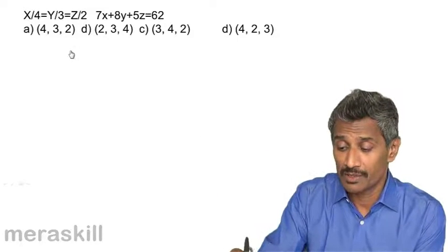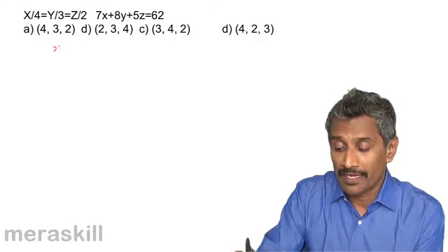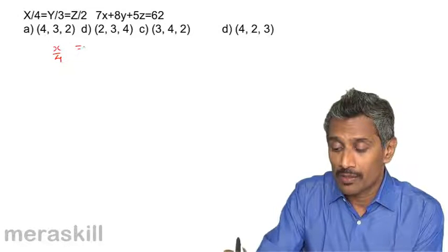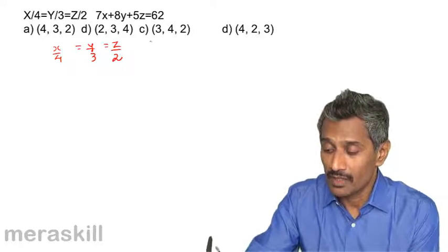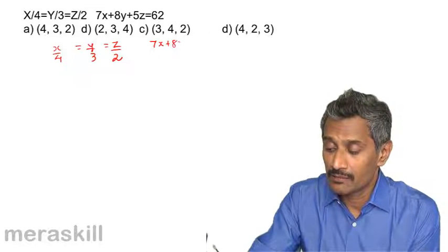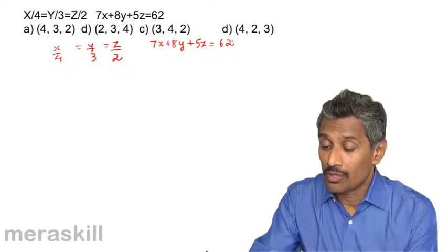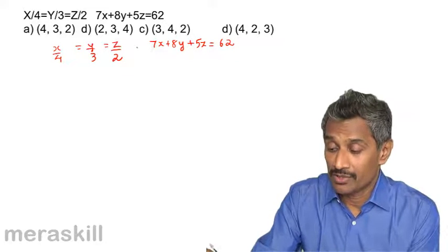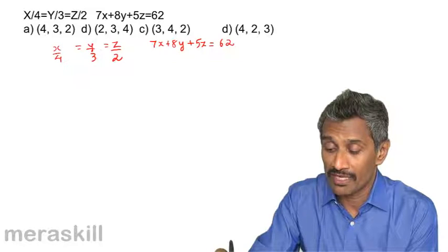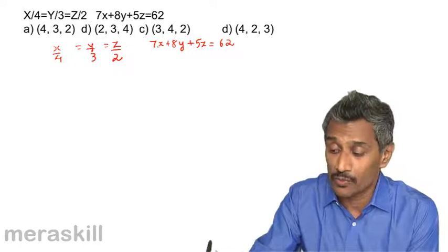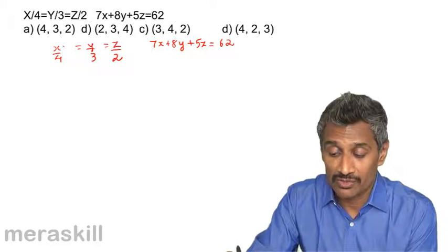We have a simple equation x/4 = y/3 = z/2, and 7x + 8y + 5z = 60k. There are two ways to solve this. We can make each ratio equal to k, so z = 2k, y = 3k, x = 4k and substitute, or we can use the process of elimination.